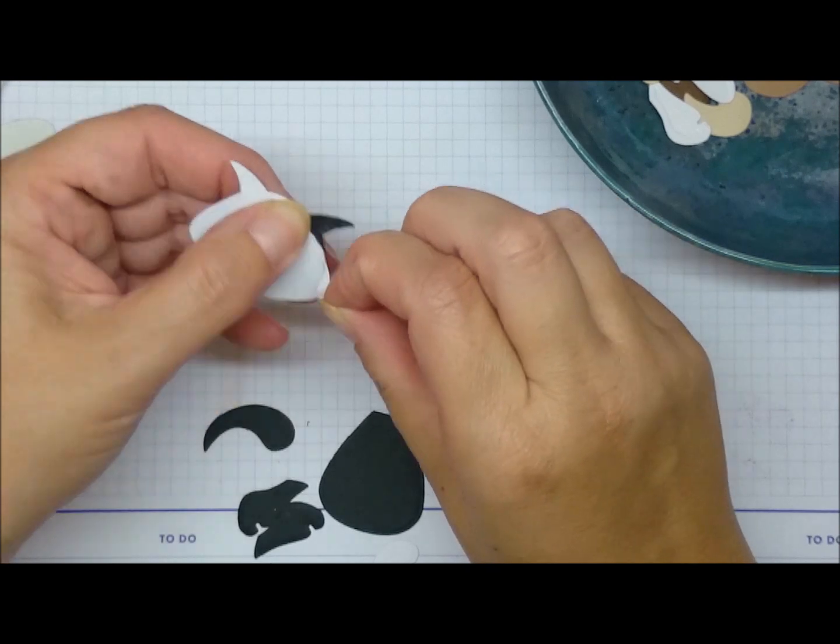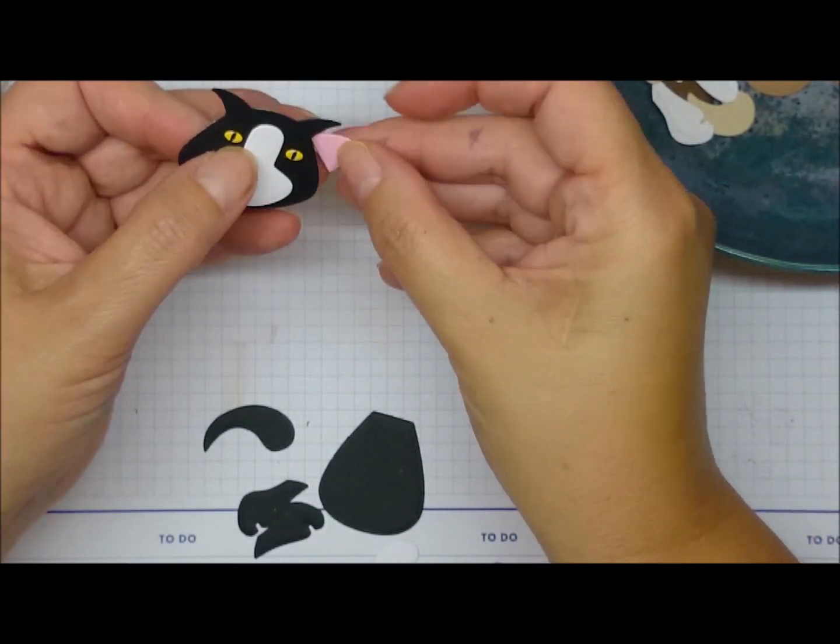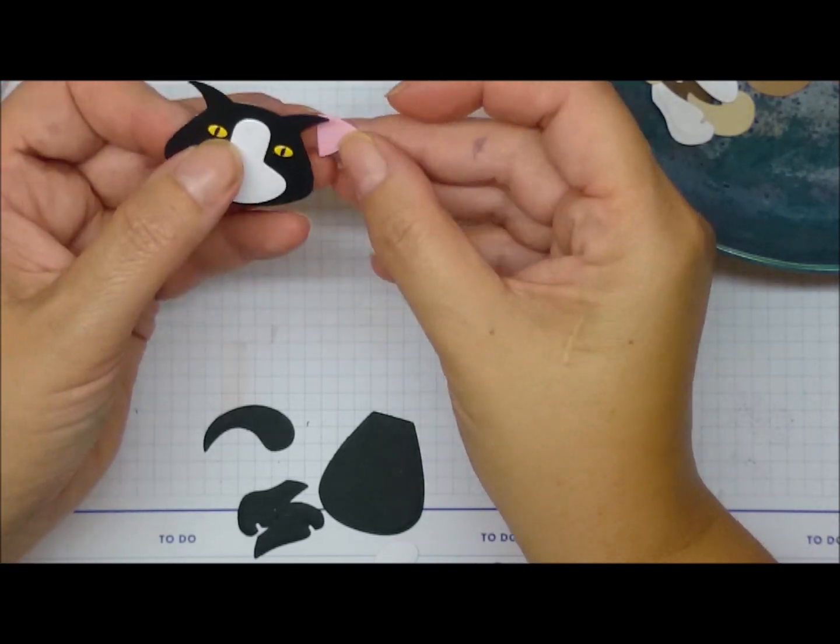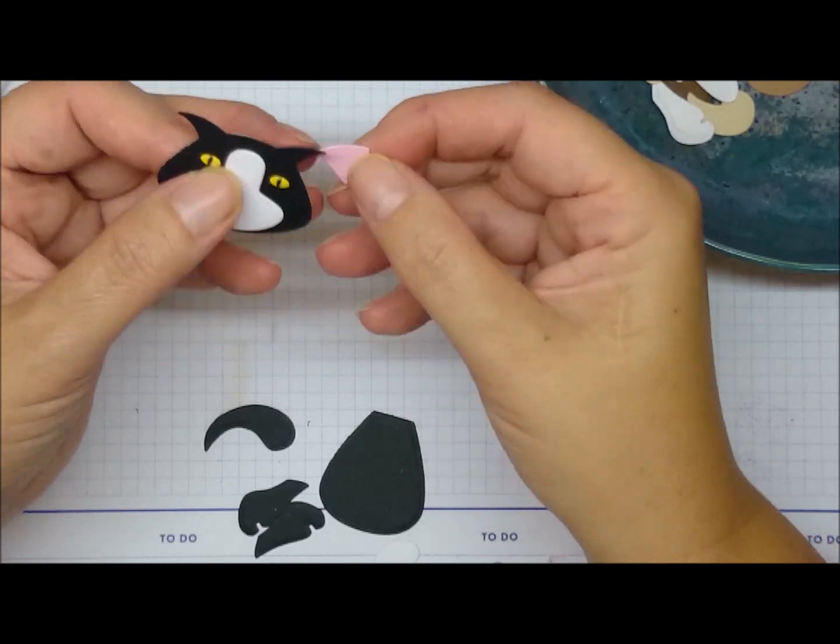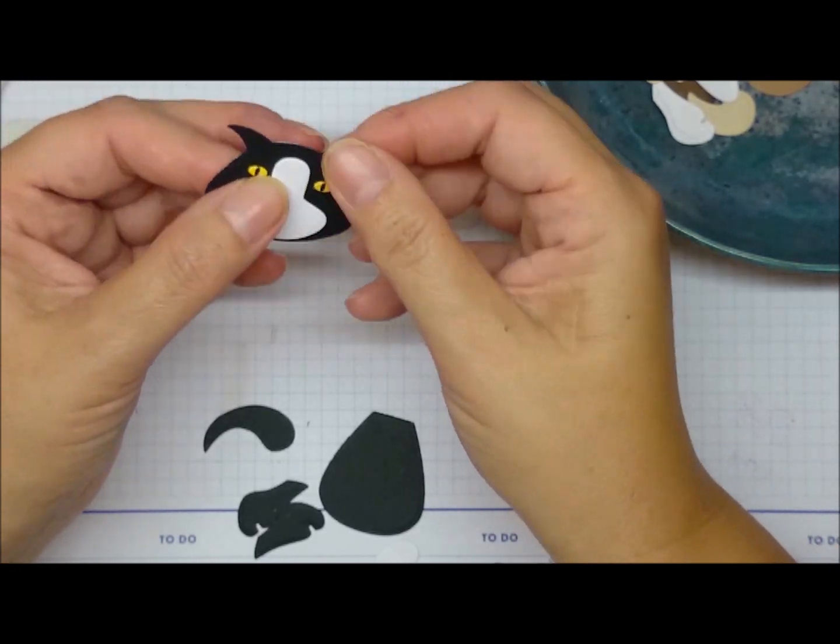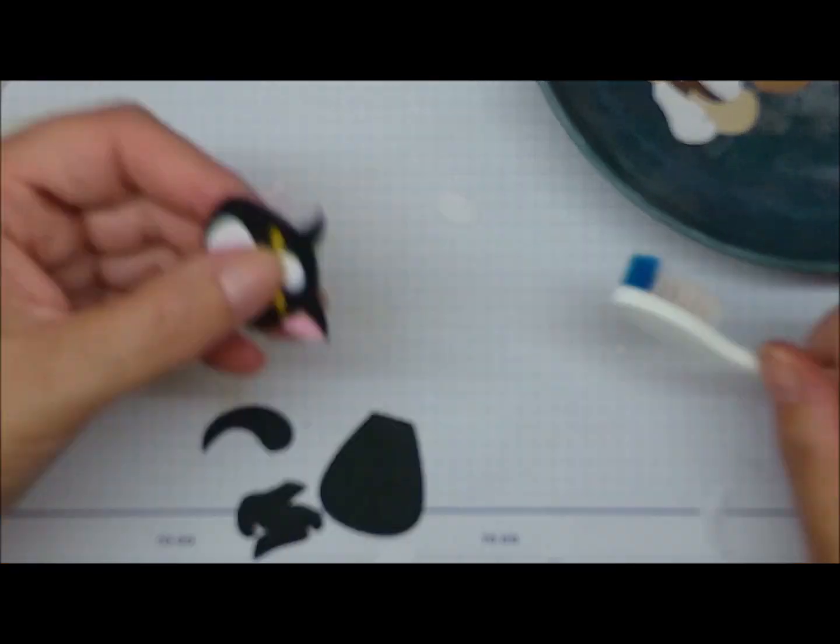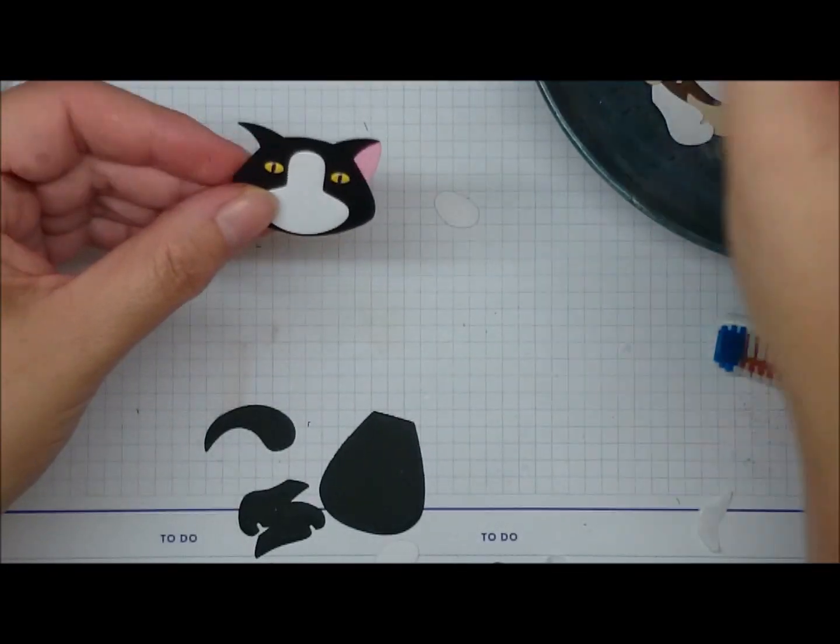To attach the ears I just peel off a little bit of the backing from the head just so it doesn't go sticky everywhere and stick to the desk. The best way to line up these ones is with the top of the ear and then make sure you tuck it behind the head.